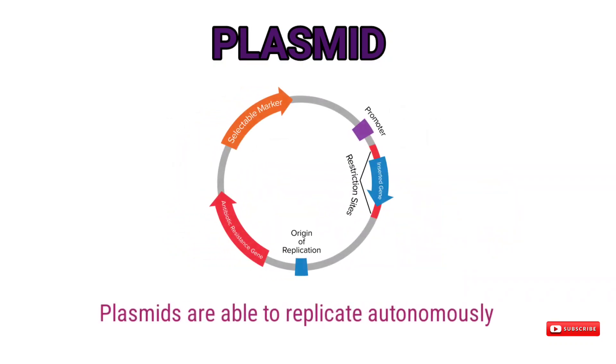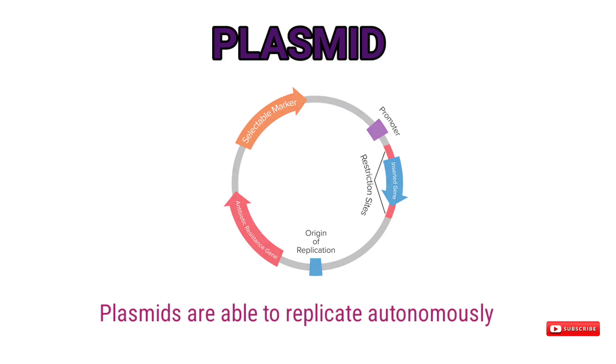Plasmids are able to replicate autonomously. Single-copy plasmids produce only one copy per host cell. You will see about the bacterial cell wall and capsule in the next video.